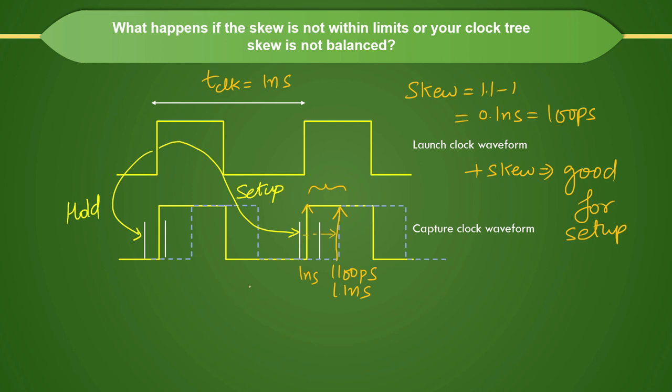But if your skew is not within the limit, it might have favored your setup, but let's say if your skew limit was 25 picoseconds or something in that range, but you are getting 100 picoseconds. Obviously, it favored setup, but if you see your hold check, it should have occurred in this window. You are expecting your edge to occur in this window, but your edge is occurring at this side, and because of that you can see it is violating the hold. So your positive skew is good for setup, but if your skew is not in the limit, then it will violate hold. Positive skew is not good for hold.